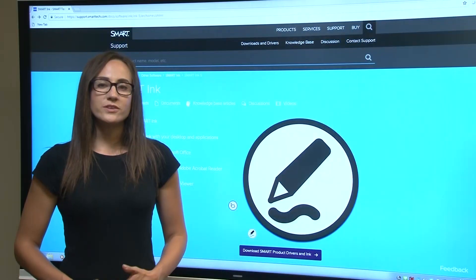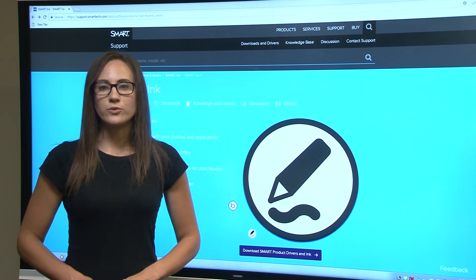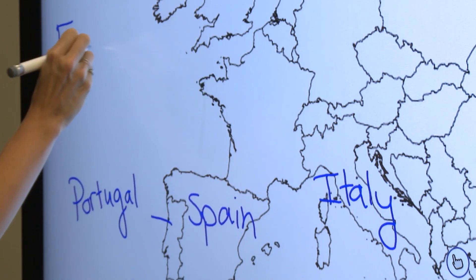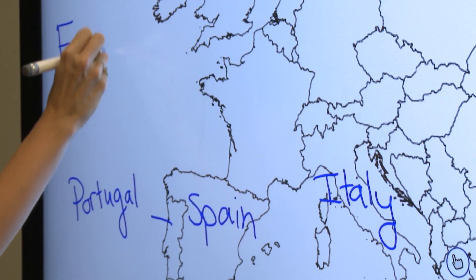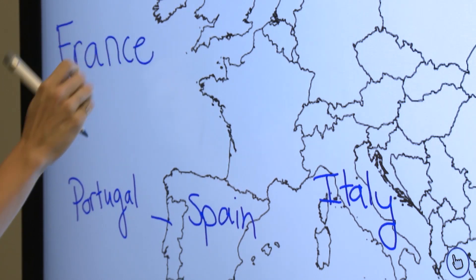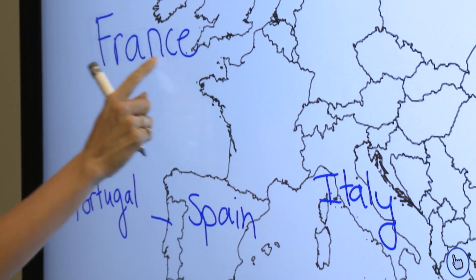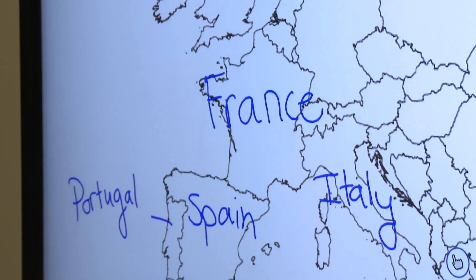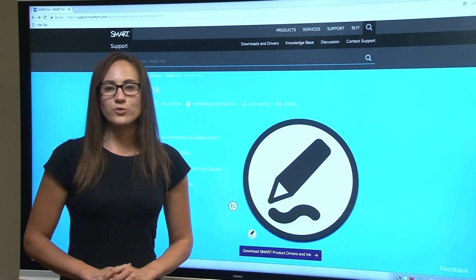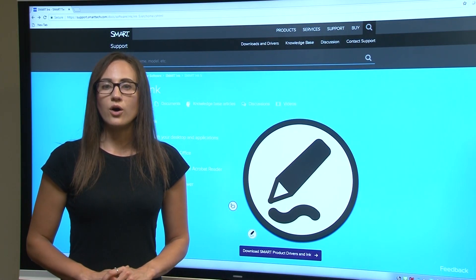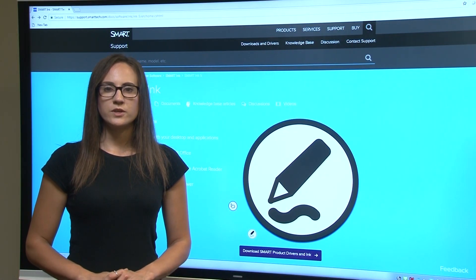When you use the display's pens to write over an application, Smart Ink doesn't make the ink a permanent part of your digital content. The ink is just an overlay, which means you can select it and move it anywhere on the page. Unless you move or erase your annotations, the ink always stays in place with the content.